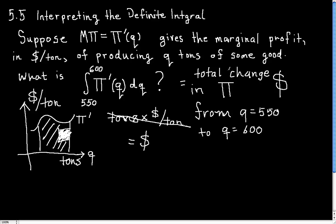So what am I looking at now? Well, I have the total change in profit from q equals 550 to q equals 600. If I just think to myself for a second, this is like saying how much profit did I get from 550 tons to 600 tons, and it's going to come out in dollars.